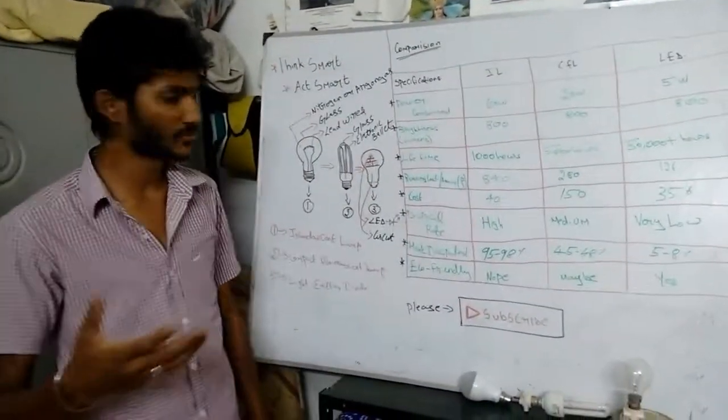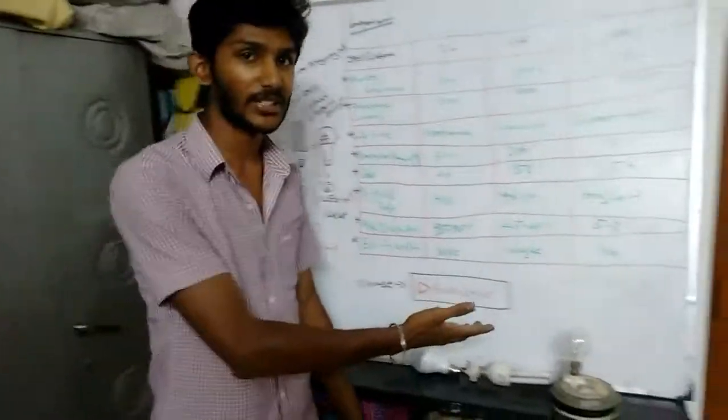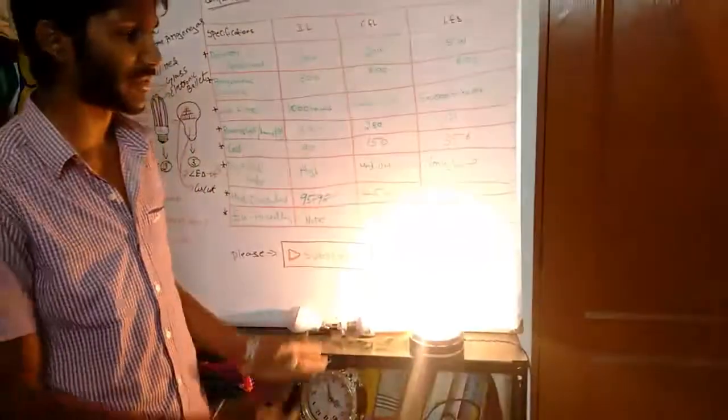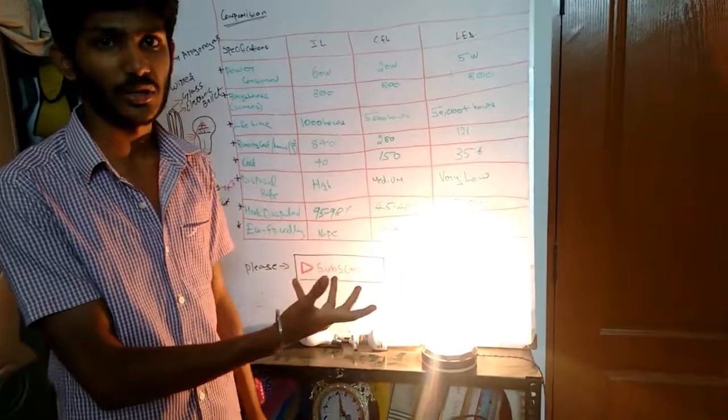So LED gives a very reliable, we can see the model experiment. We glow an incandescent lamp. We can see very much heat is dissipated and it gives only a very less amount of light.